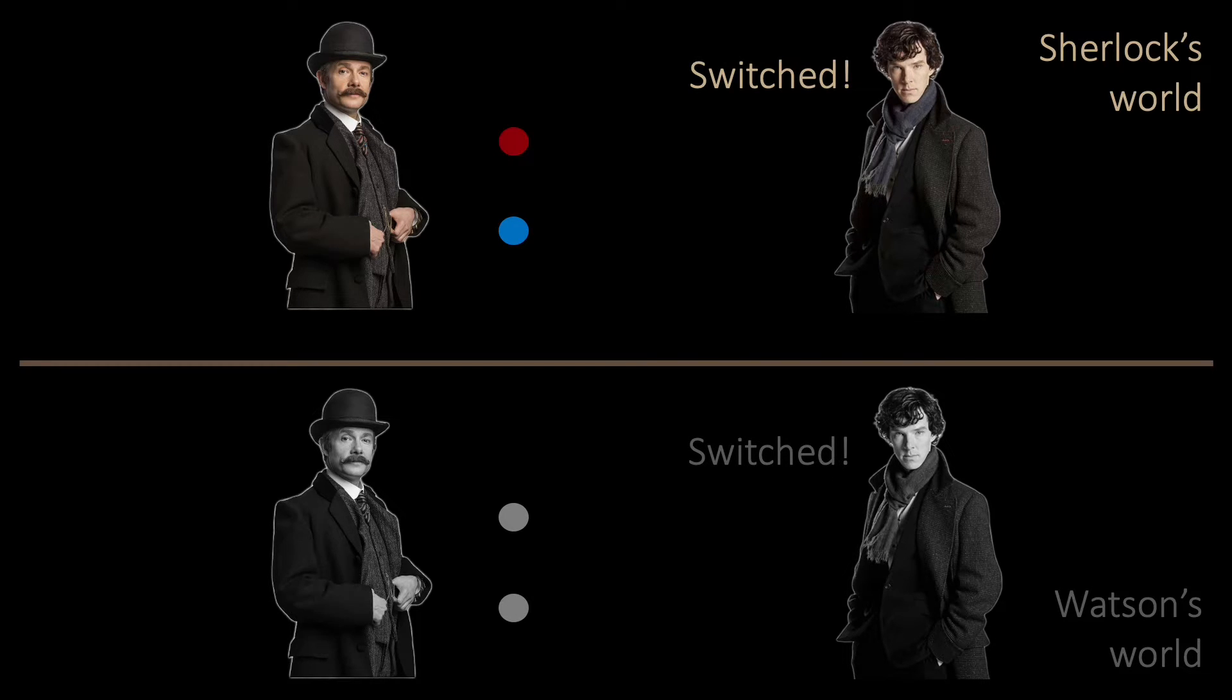Of course, Sherlock might be lucky, so they repeat the protocol many times. If Sherlock always answers correctly, then Sherlock can distinguish the colors with a high probability. And none of Sherlock's answers reveal the color of the spheres.